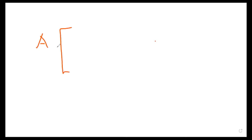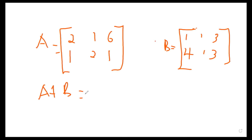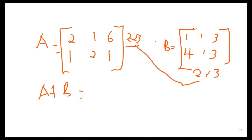For example, matrix A is given as [2, 1, 6; 1, 2, 1] and matrix B is given as [1, 1, 3; 4, 1, 3]. Addition of A and B is only possible if the dimension of A is the same as the dimension of B. Matrix A is a 2×3 and matrix B is also a 2×3. Once I satisfy this rule — both rows and columns are the same — I can add them.